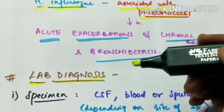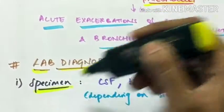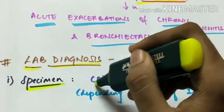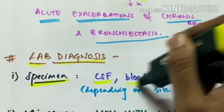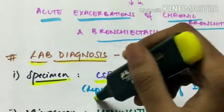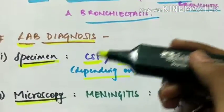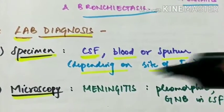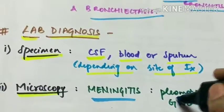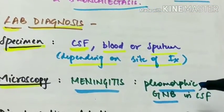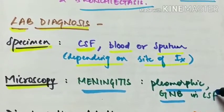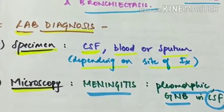Let's now see the lab diagnosis of Haemophilus influenzae. First, collection of specimen which includes cerebrospinal fluid, blood or sputum depending on the site of infection. Second is microscopy. In case of meningitis, pleomorphic gram-negative bacilli are visualized under microscope in cerebrospinal fluid.